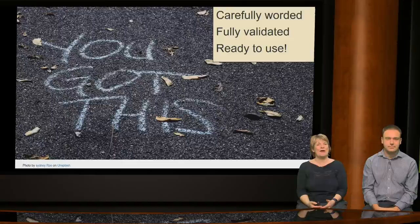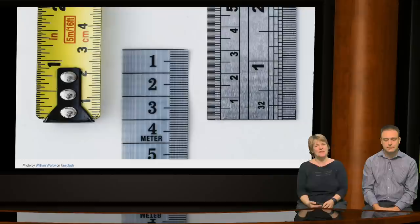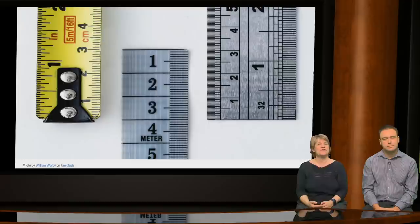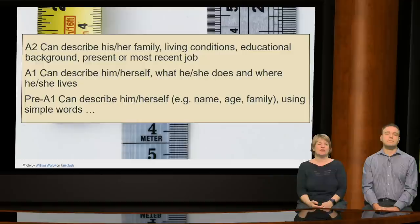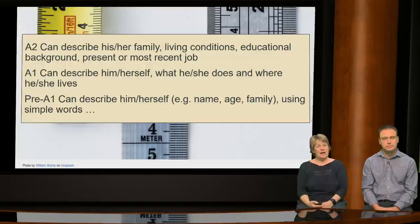You can compare your curriculum and materials to descriptors at a particular CFR level to see whether the content appears aligned, and supplement or amend your materials accordingly. You can also pick key level descriptors to assess learners against — to diagnose strengths and weaknesses or see how ready they might be for an external assessment. For example, three adjacent descriptors from the Speaking Sustained Monologue Describing Experience Scale: A2 can describe family, living conditions, educational background, and present job; A1 can describe themselves, what they do, and where they live; pre-A1 can describe themselves using simple words such as name, age, and family.